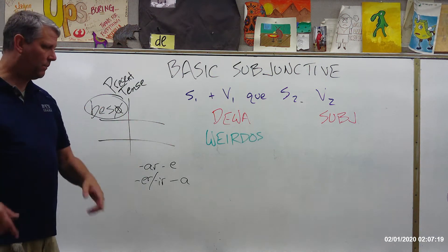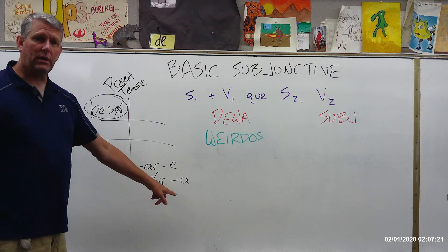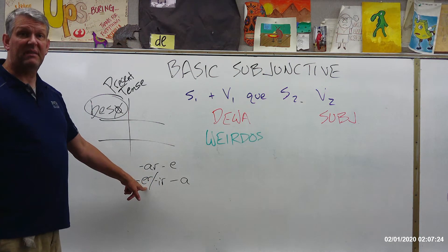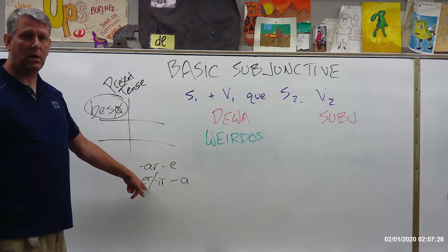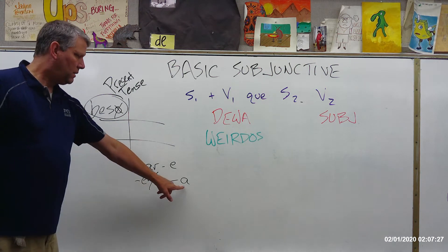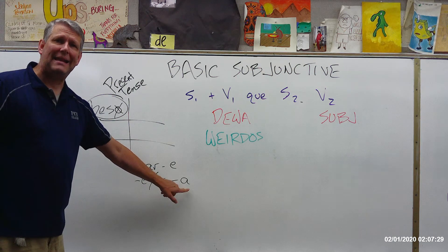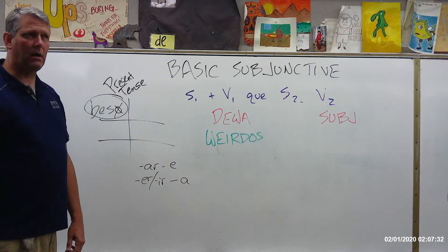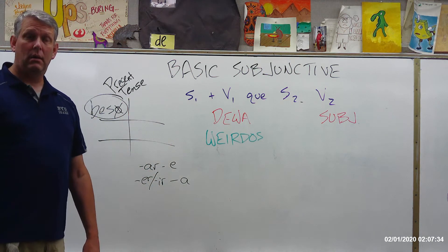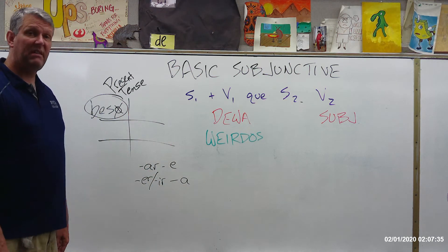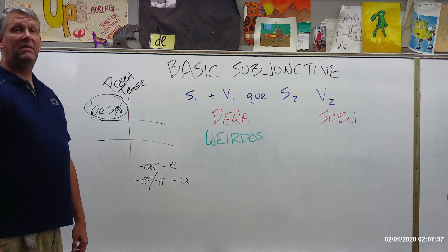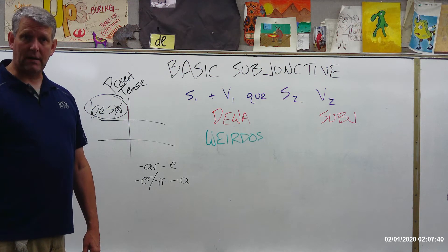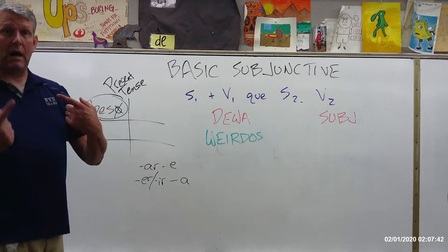It's the opposite vowel. For ER and IR verbs, instead of — for example, vivir would normally be vivo, vives, vive, vivimos — this time, for the subjunctive, we're going to add A's. So the yo form would be viva, the tú form vivas, viva, vivamos, viváis, and vivan.